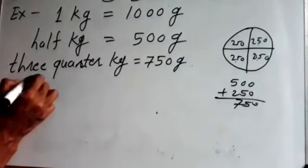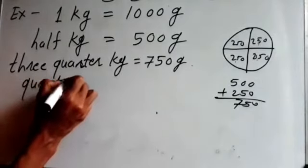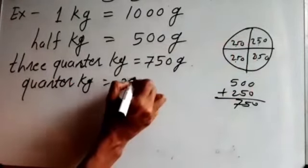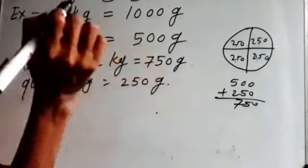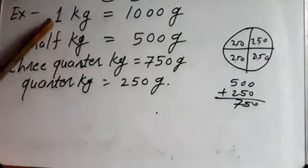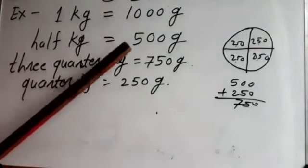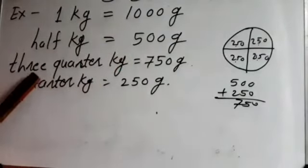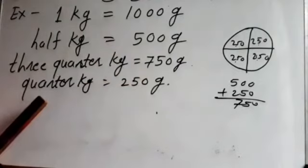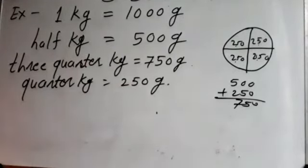And a quarter kilogram — quarter means one-fourth part — is equal to 250 gram. So these four conversions are basic conversions: 1 kilogram is 1000 gram, half kilogram is 500 gram, three-quarter kilogram is 750 gram, and a quarter kilogram is 250 gram.